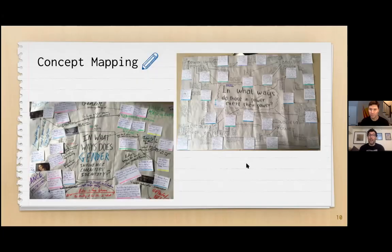We also spend a lot of time concept mapping and thinking about larger topics or issues that we're interested in. It really allows us a great way to compare texts and to focus on intertextuality. As we continue to read more texts and interact with a variety of texts over the course of the two years, it's a really fun activity to track our thinking and how our thinking changes over time.